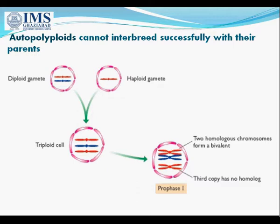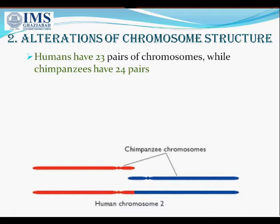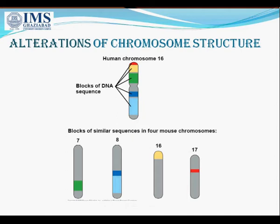Now let's see the second condition: alterations of chromosome structure. Humans have 23 pairs of chromosomes while chimpanzees have 24. Following the divergence of humans and chimpanzees from a common ancestor, two ancestral chromosomes fused in the human line, as we can see in the diagram. A second example is human chromosome 16 — as we can see, the different colored blocks of DNA sequence from human chromosome 16 are quite similar to four mouse chromosomes: chromosome 7, chromosome 8, chromosome 16, and chromosome 17.